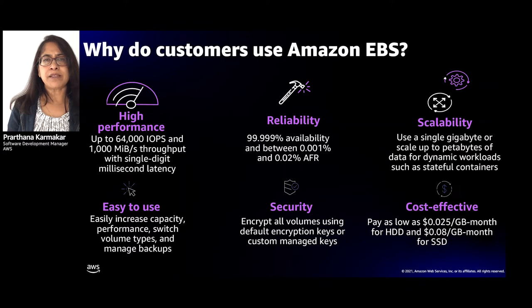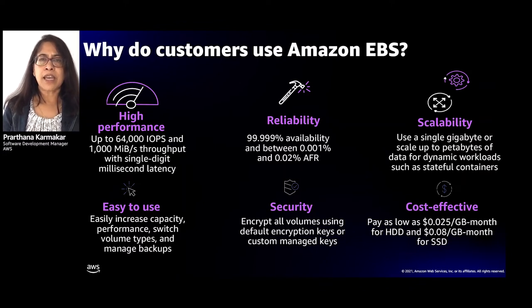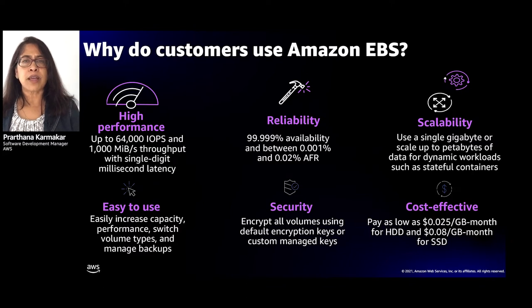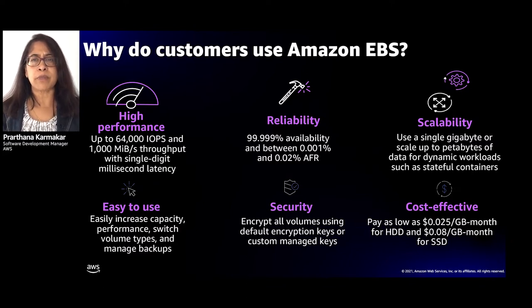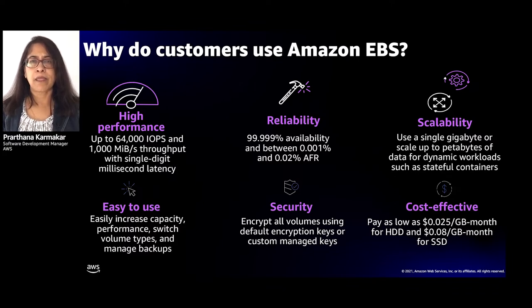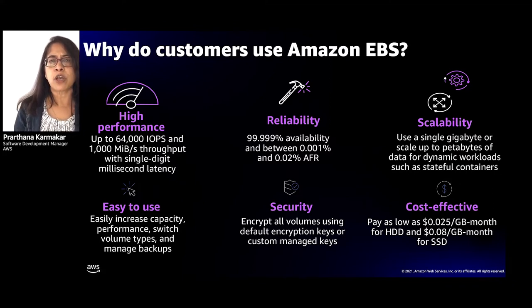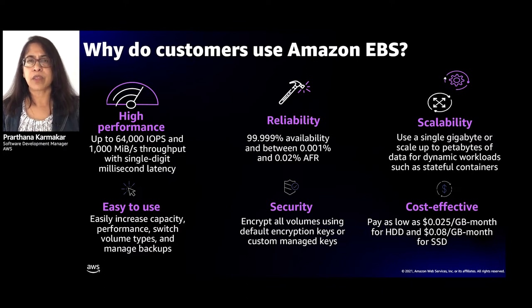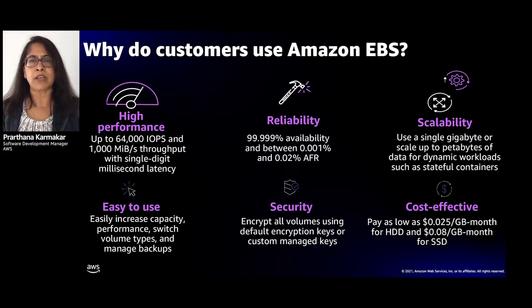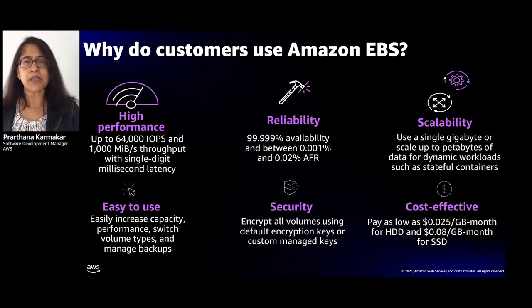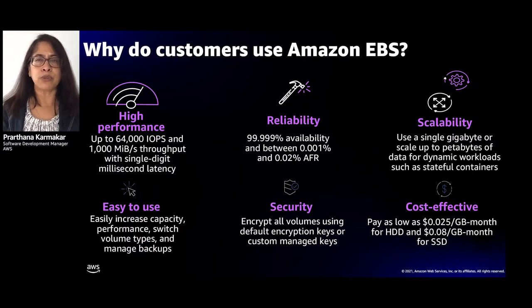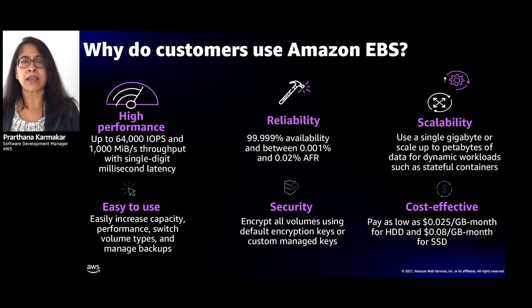We launched EBS 13 years ago in 2008, and today it is used by millions of developers to store exabytes of data across millions of EBS volumes, driving trillions of I/O operations every day. In that time, we have come to understand what customers care about most when using block storage in the cloud. Customers value high performance for their most resource-intensive applications. This means high IOPs and throughput. A volume like IO2 is built to scale to 64,000 IOPS and 1,000 megabytes per second of throughput.